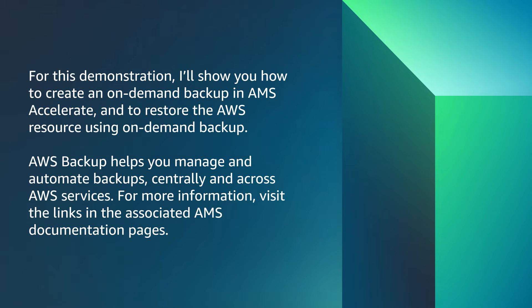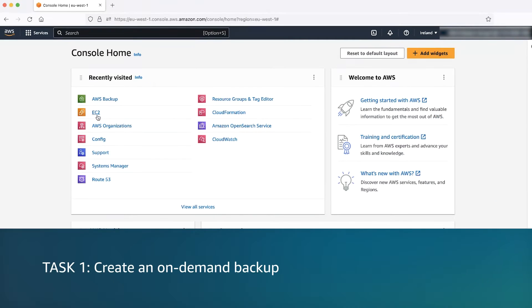For this demonstration, I will show you how to create an on-demand backup in AMS Accelerate, and I will show you how to restore the AWS resource using on-demand backup. AWS Backup helps you manage and automate backups centrally and across AWS services. For more information, visit the links in the associated AMS documentation pages. Note: make sure that you have an EC2 resource running.